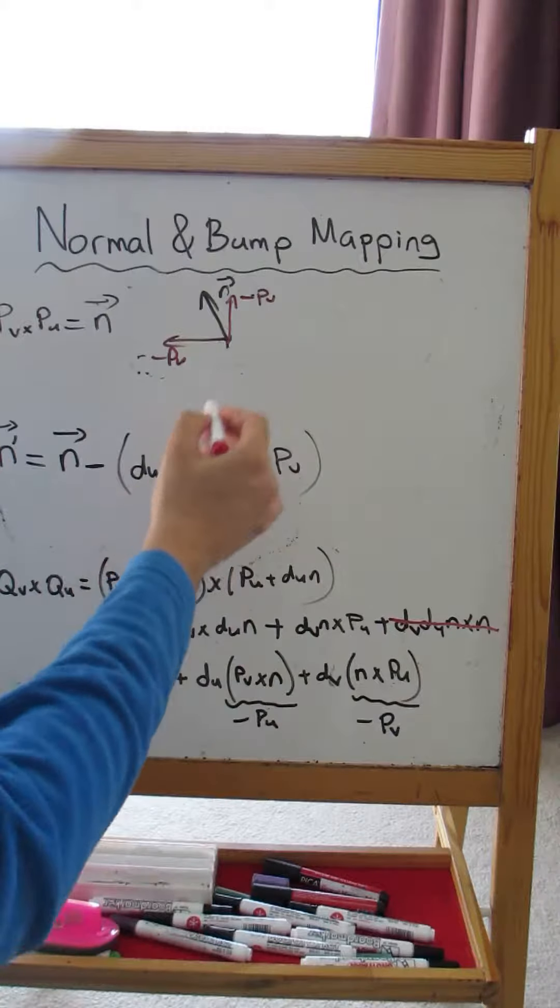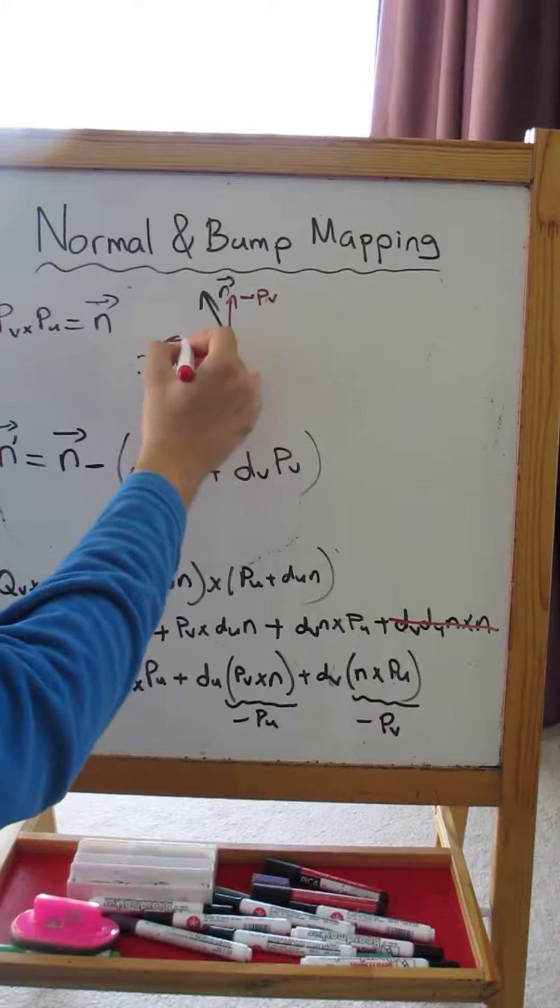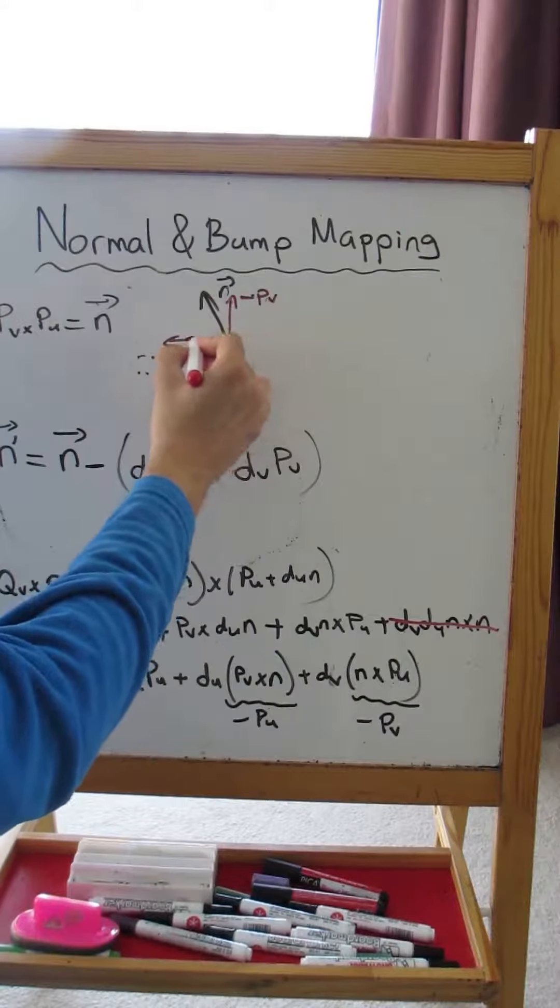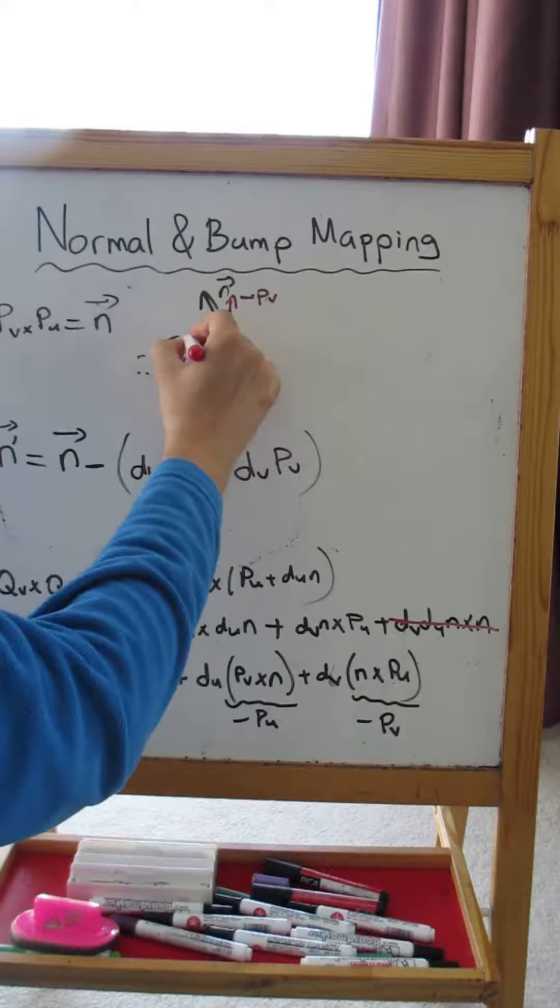I will go DU units along PU, so I'll go like this much, and DV units along PV, so I'll go this much.